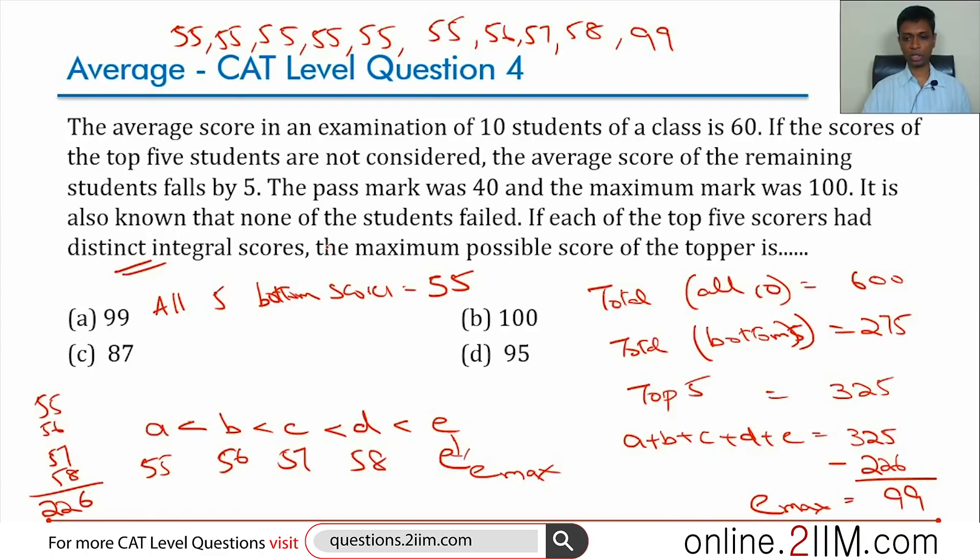All conditions are satisfied - nobody below 40, nobody above 100, and the bottom 5 all less than or equal to the top 5, average of the bottom 5 being 55. So this is more or less like a puzzle, how do I make inferences to make one number maximum. Wonderful question and the answer would be choice A.